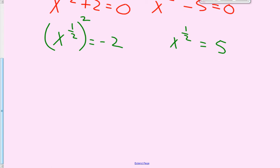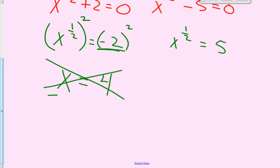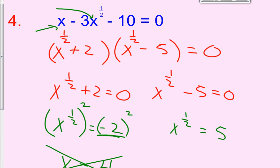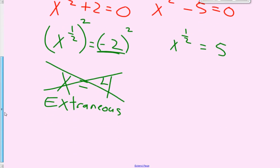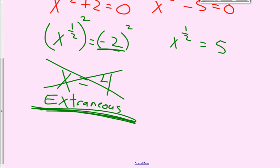Solving: if I square both sides to get rid of the 1/2 exponent, a power raised to a power — 1 half times 2 equals 1 — gives x to the first. A negative 2 squared is positive 4. Class, do you remember the term from Advanced Algebra A called an extraneous solution? Extraneous means you do everything algebraically correct but get an answer that doesn't satisfy the equation. Whenever you square a negative number, it turns positive and becomes extraneous — if you put 4 back in for x, it would not work. So whenever you square a negative number, that's an extraneous solution — I'll count that wrong on your test if you don't label it as extraneous.